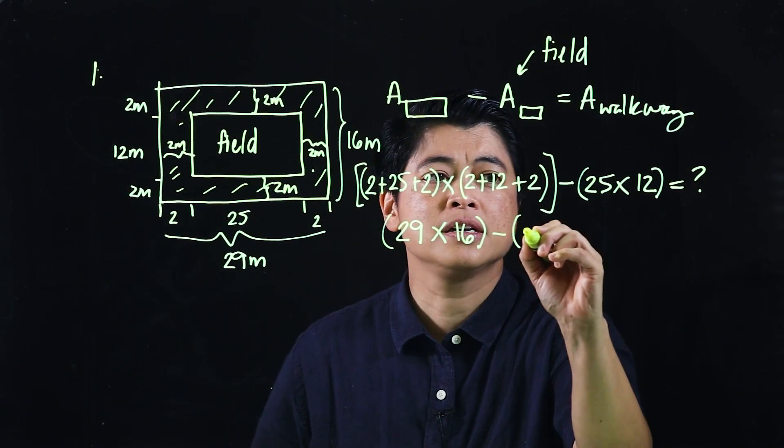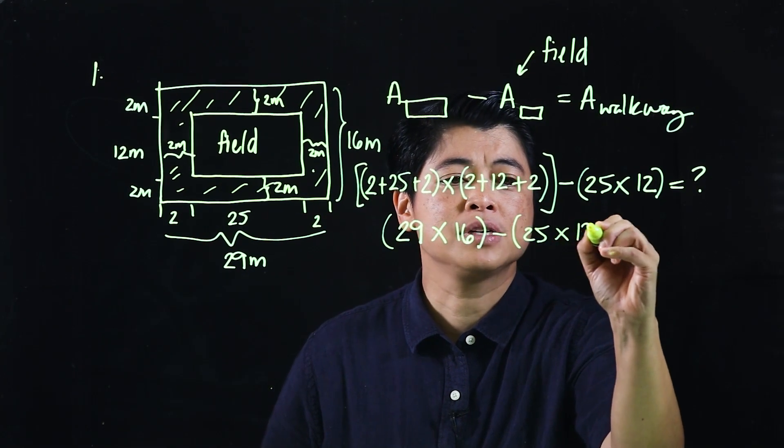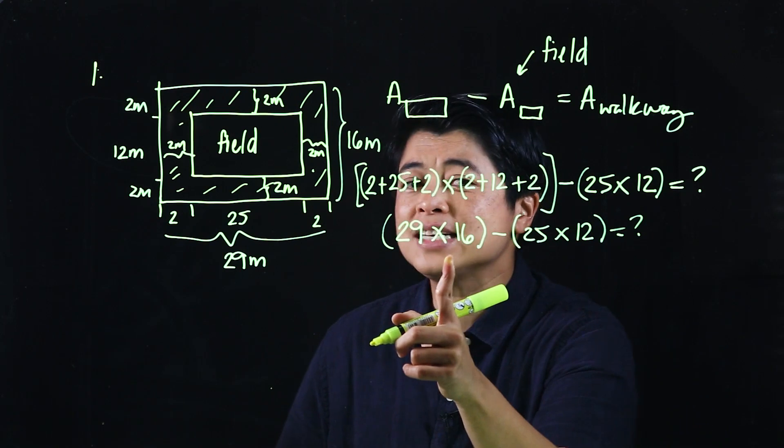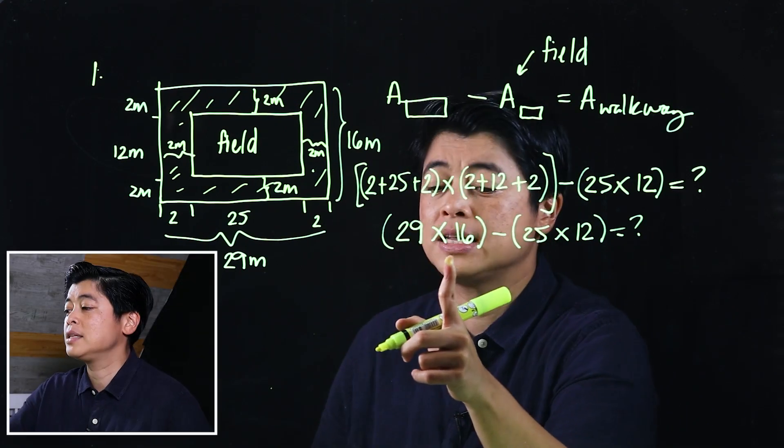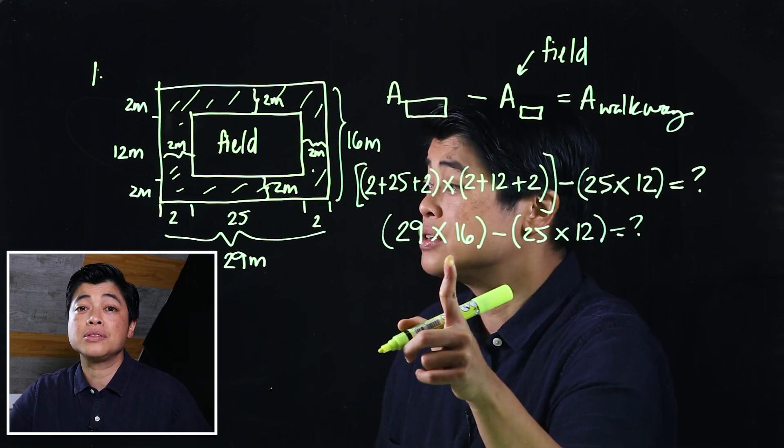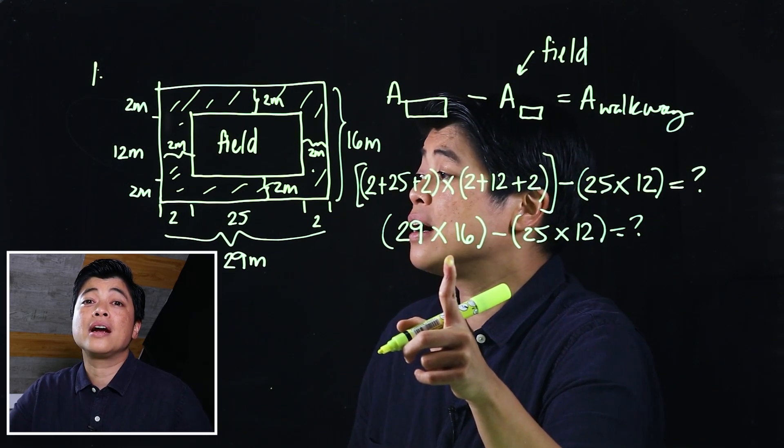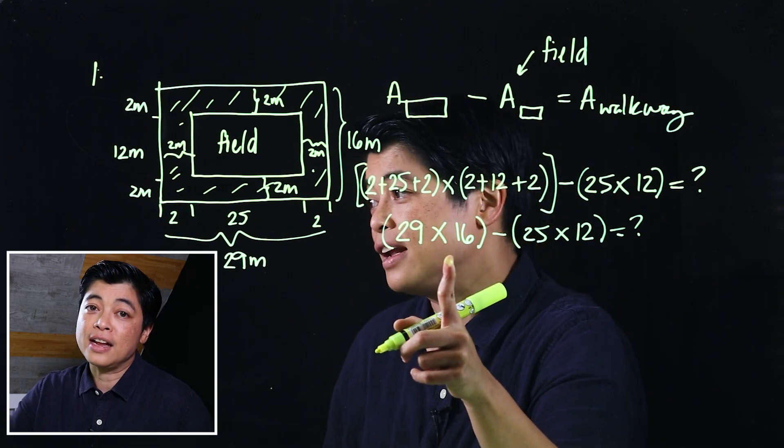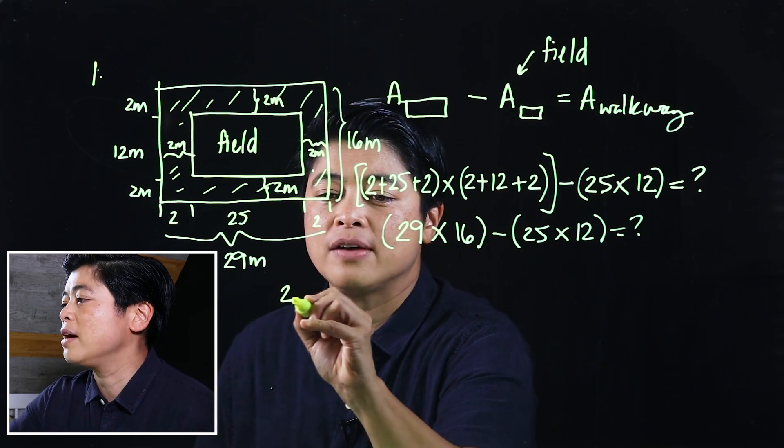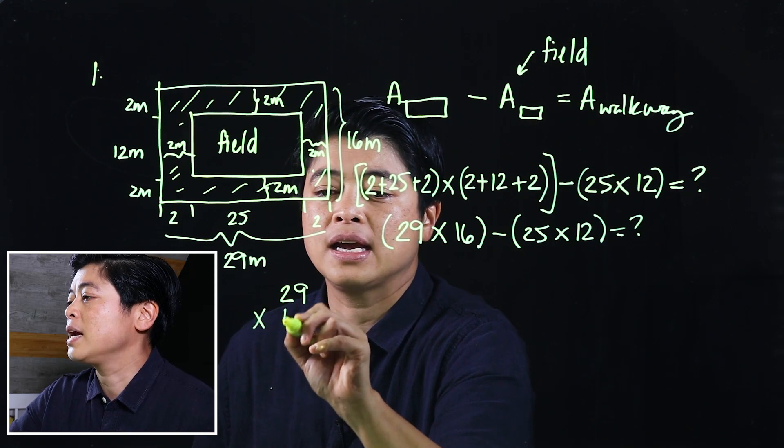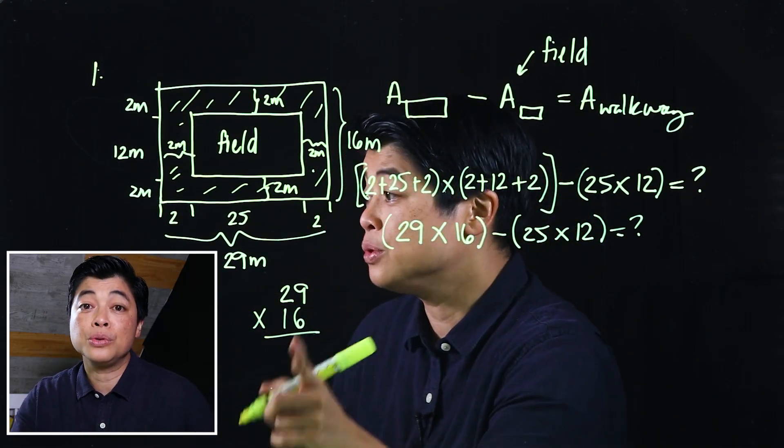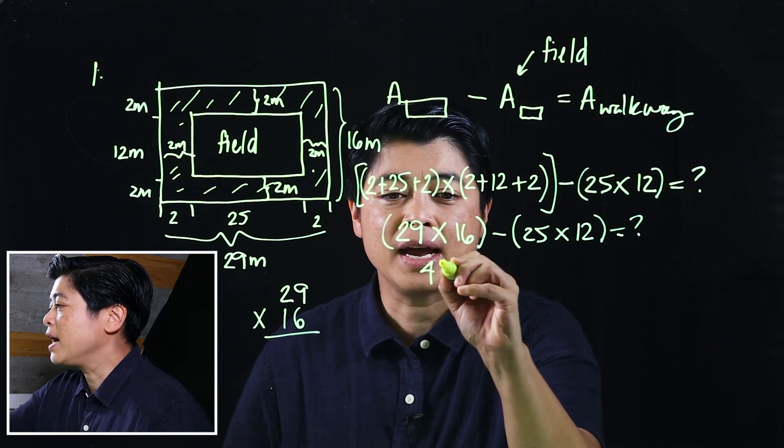Then minus 25 times 12. Clearly this has to be computational. The kids at grade 4 are not allowed to use calculators yet. When they're in grade 5, then calculators are allowed. So this is computational. We have to do 29 times 16. If you multiply that would be 464.